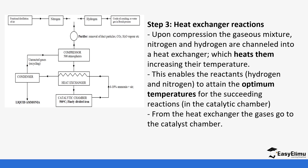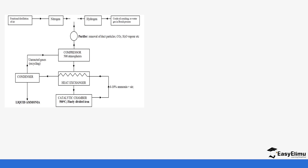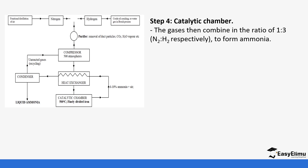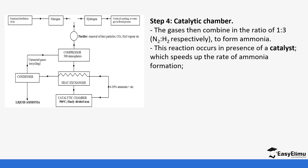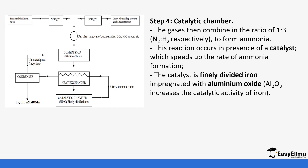The gases are then taken to the catalytic chamber — remember they have not yet reacted. When they go to the catalytic chamber, this is where they combine in a ratio of 1:3 to form ammonia. The reaction at the catalyst is sped up by the presence of the catalyst itself, which is a substance that speeds up the reaction. There is formation of ammonia, and the catalyst is made up of finely divided iron impregnated with aluminium oxide.